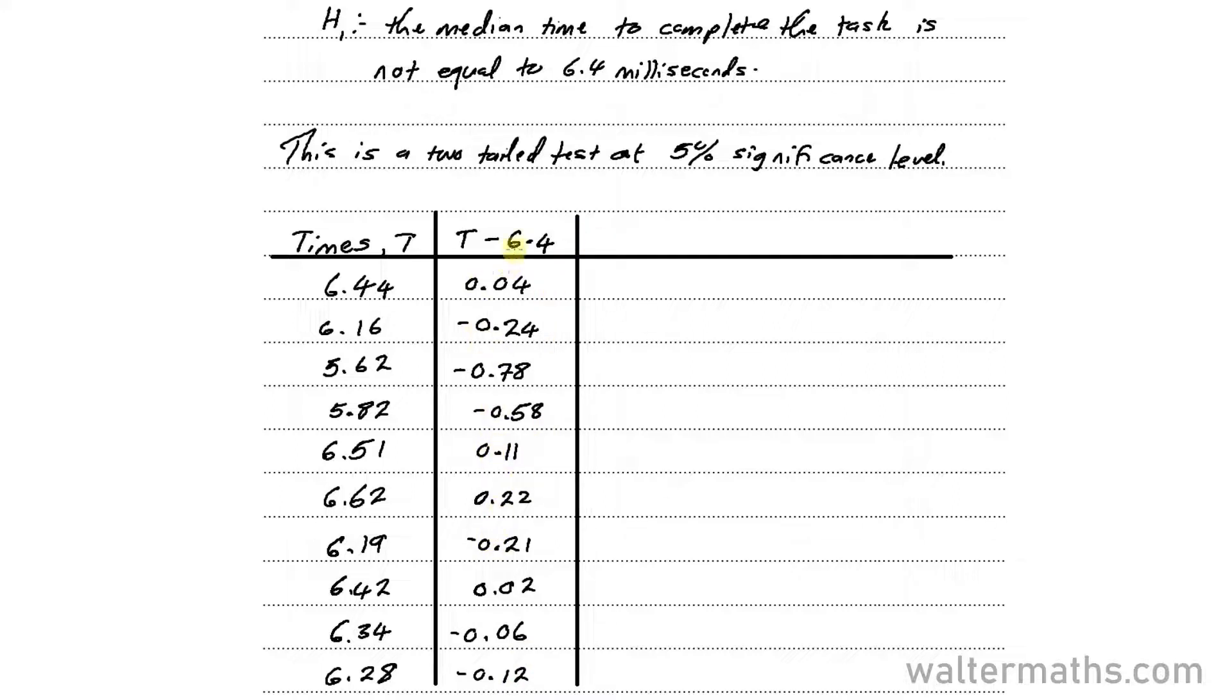Okay, so I will need the absolute value of these differences. So for the absolute value, that's |T - 6.4|. So I'll make a column for this. That's 0.04. Then the absolute value here for all negatives, they become positive. So it becomes 0.24, 0.78, 0.58, 0.11, 0.22, 0.21, 0.02, 0.06, and 0.12. So I now have the absolute values.